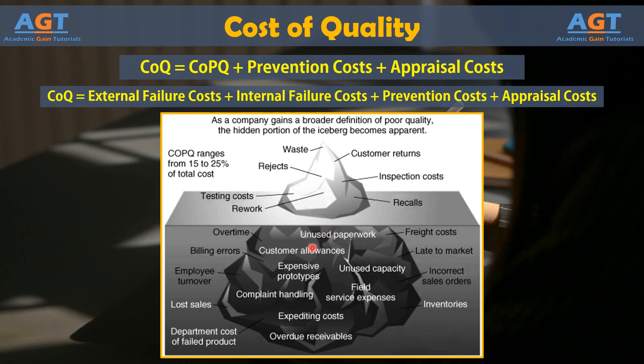Beneath the surface, however, an iceberg is always much bigger. The same is usually true and relevant for calculating cost of quality also, and prevention and appraisal activities often have hidden costs such as unnecessary overtime, paperwork, or system expenses.